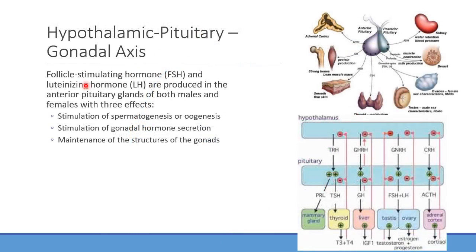We're going to call this the hypothalamic-pituitary-gonadal axis. Follicle-stimulating hormone and luteinizing hormone are the primary things we're talking about. The anterior pituitary produces both of these regardless of whether the patient is male or female. They help stimulate spermatogenesis — formation of sperm — or oogenesis, development of eggs. They also stimulate gonadal hormone secretion: predominantly testosterone for males, and estrogen and progesterone for females. Does that mean guys don't produce any estrogen or progesterone? We still produce some; there are interconversions that can happen, but it's much less than in female patients. Similarly, females can produce a little testosterone, but in lesser amounts.